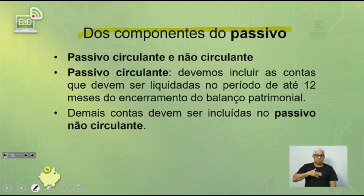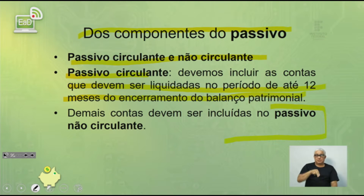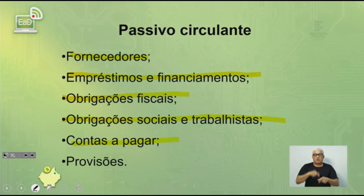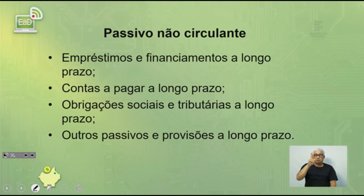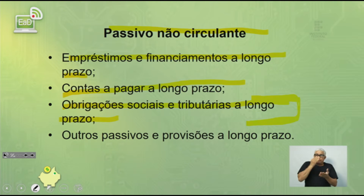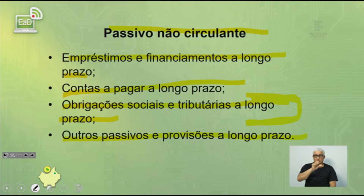Os componentes do passivo: também dividido em passivo circulante — devem ser liquidados em até 12 meses do encerramento do balanço — e passivo não circulante, todas as demais contas. Exemplos de passivo circulante: fornecedores, empréstimos e financiamentos, obrigações fiscais, obrigações sociais e trabalhistas, contas a pagar e provisões. Passivo não circulante: empréstimos e financiamentos a longo prazo, contas a pagar de longo prazo, obrigações tributárias parceladas além do exercício seguinte, outros passivos e provisões a longo prazo.